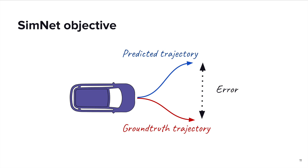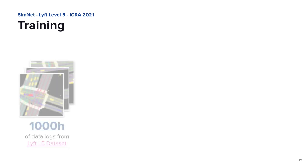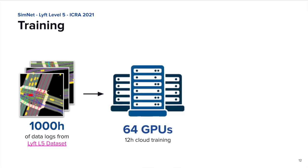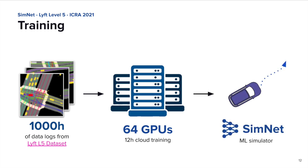SimNet is a deep convolutional neural network trained using behavioral cloning. For each sample and at each time step, we compute the error as the L1 norm between the predicted trajectory and the ground truth one, and propagate it through the network. This vanilla approach works incredibly well for our case, and we don't need any smart tricks to improve model performance. What we do need is data — a lot of data. SimNet is trained on the recently released Lyft L5 dataset, the biggest publicly available dataset for self-driving research, with more than a thousand hours of driving time and millions of agent trajectories. We train the model over a cluster of 64 GPUs, and the whole training takes around 12 hours.